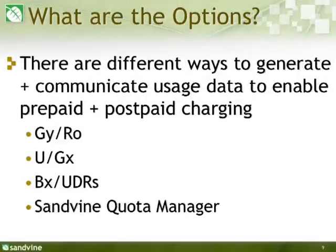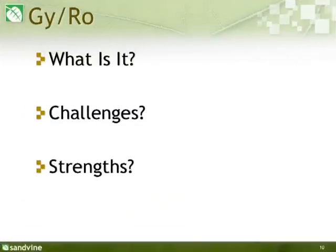There are different ways to generate and communicate usage data in a standards-compliant framework to enable prepaid and postpaid charging use cases: Gy, usage monitoring over Gx, the output of usage data records via the Rf interface (essentially a CSV or flat text file output interface), and Sandvine's own quota manager product. Starting with Gy, which is really used for online charging services — Gy as an interface is defined in TS 32.299 in the online charging sections, and it provides a standards-based mechanism for usage data to be communicated. The purpose of online charging is to provide charging information to the OCS so that it can do credit control before any usage action is allowed.